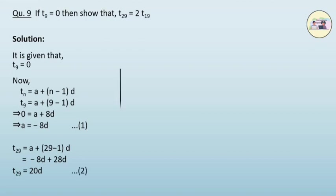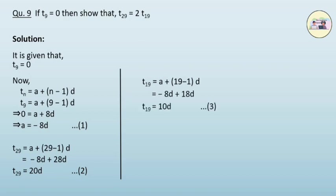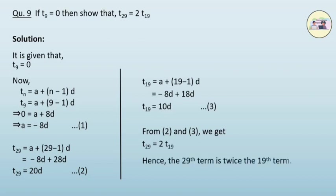Therefore t(19) = a + (19−1)d = a + 18d = −8d + 18d = 10d. This is equation 3. From equations 2 and 3, t(29) = 20d = 2 × 10d = 2 × t(19). Hence, the 29th term is twice the 19th term.